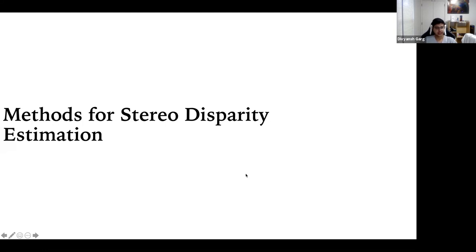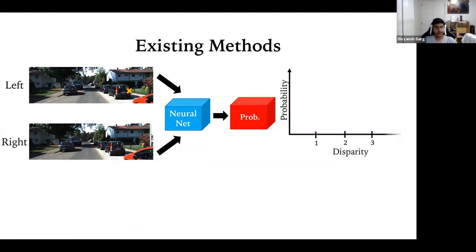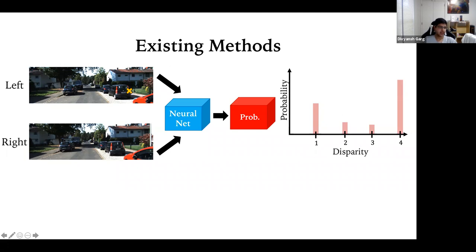What are the current methods for stereo disparity estimation? Recent methods include a neural network that takes a left and right image as input. For each pixel, it outputs a probability over discrete disparity values like 1, 2, 3, 4. This distribution can be multimodal, especially for pixels that lie around object boundaries — for example, a pixel at the boundary of a car and background could have no exact single depth, so you can get a multimodal distribution.